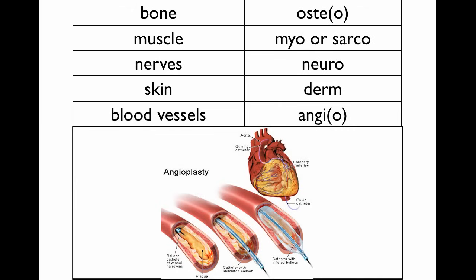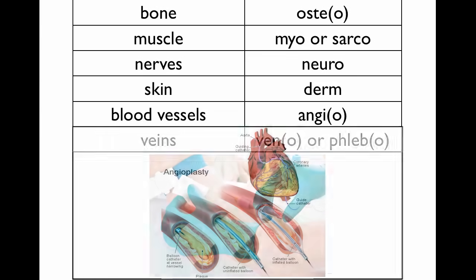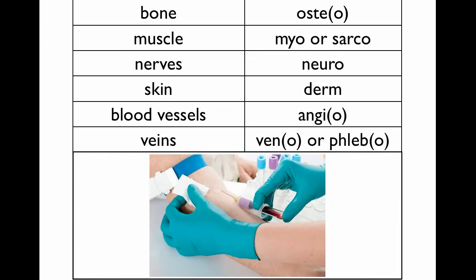For blood vessels, you'll often see the term angio. You've hopefully heard of angioplasty, which is basically the insertion of a catheter with a balloon inflated to create space inside an occluded vessel. For veins, we have veno or phlebo — like a phlebotomist, someone who draws blood for their profession.